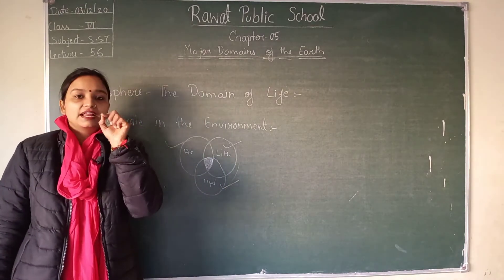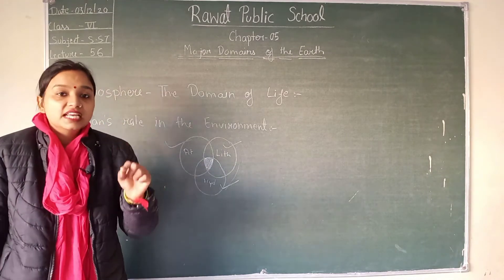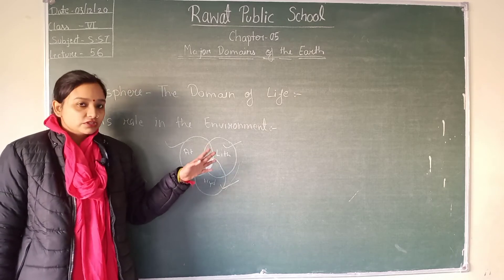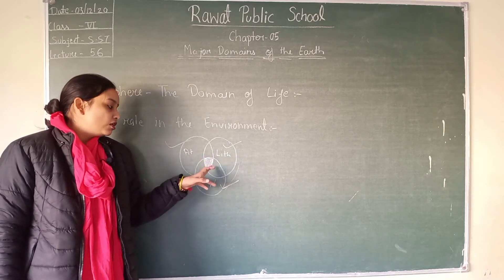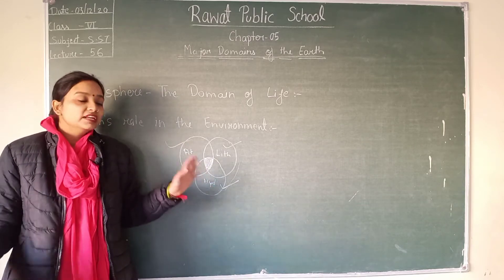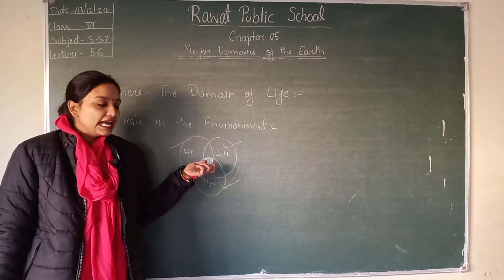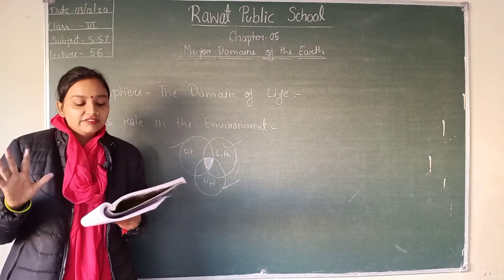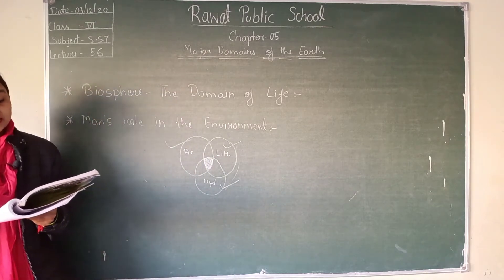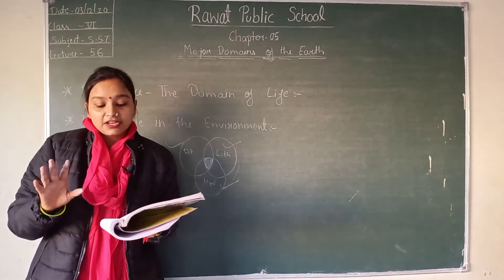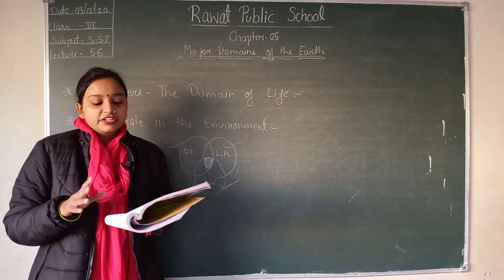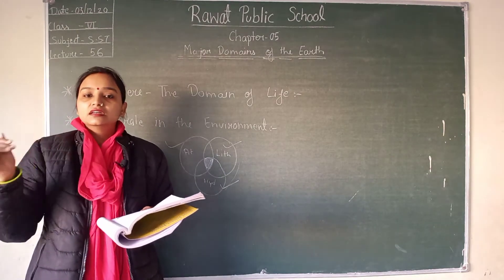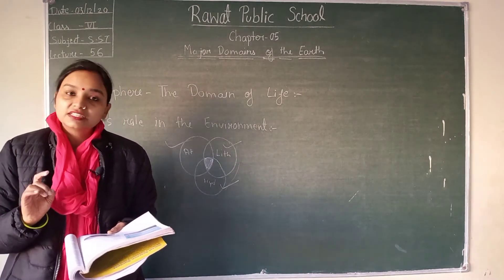In the biosphere there are about 20 million species of plants, animals, microbes, and fungi. They are broadly divided into two kingdoms: the plant kingdom and the animal kingdom. Environmental conditions influence their distribution.